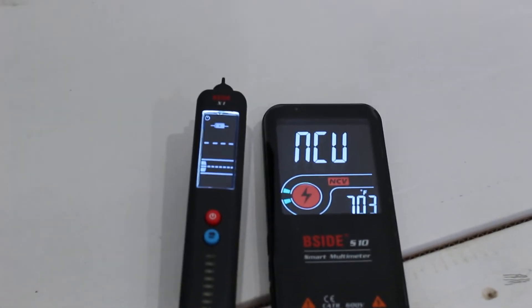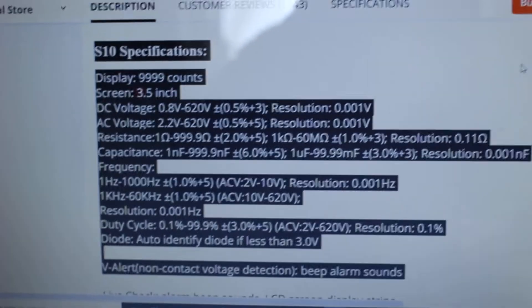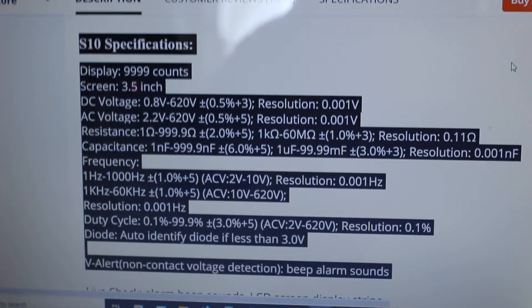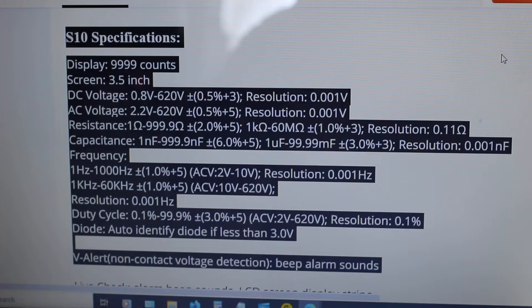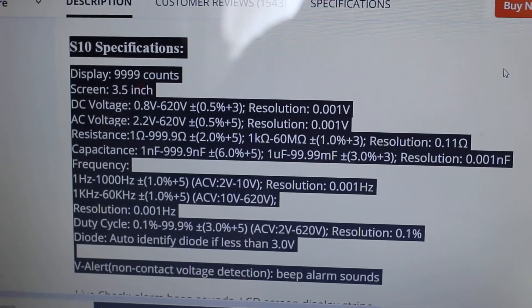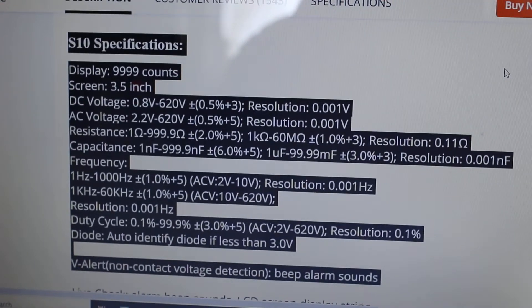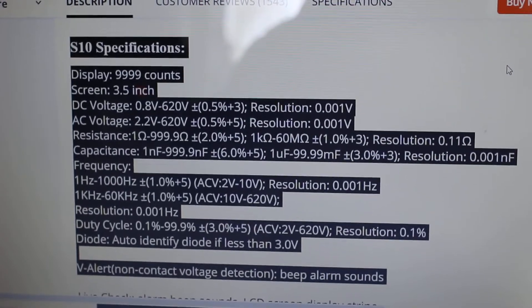And now let's go ahead and take a look at these specifications here. This text here that's highlighted in black gives you an idea of what the S10 meter can do. And you see there which shows DC voltage and AC voltage over on your left.